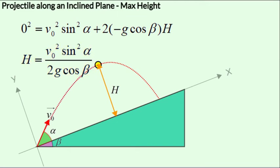In a sense, these two derivations for the maximum height yielding the same result actually confirms that the time taken to get to the maximum height position is indeed half the total time of flight.